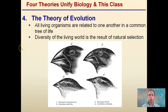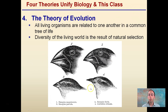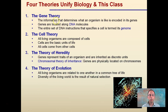The fourth theory that unifies biology is the theory of evolution. All organisms are related to one another in a common tree of life. The diversity of the living world is a result of natural selection. You can see this with the different bird beaks as Darwin came up with — all the different birds that eat different food items and weren't all competing may have all stemmed from one common ancestor, each developing certain degrees of specialization.